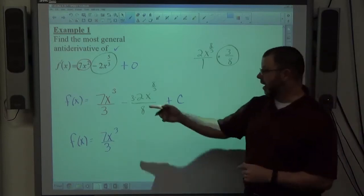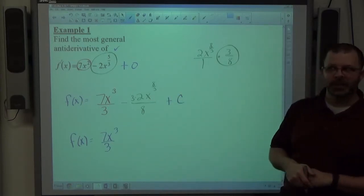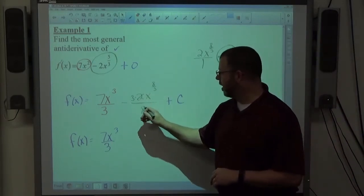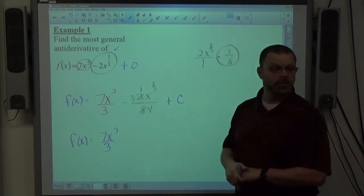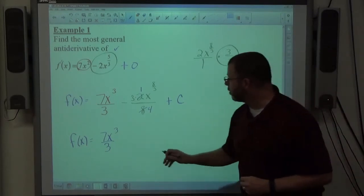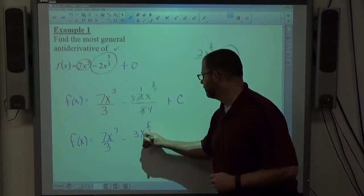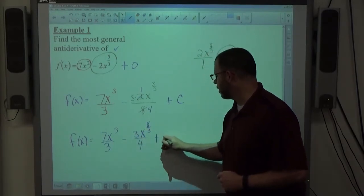How about the 2 and the 8 reduce to a 4 and a 1 maybe? Let's look to reduce fractions if possible. So I'm going to get minus 3x to the 8 thirds over 4 plus our constant.